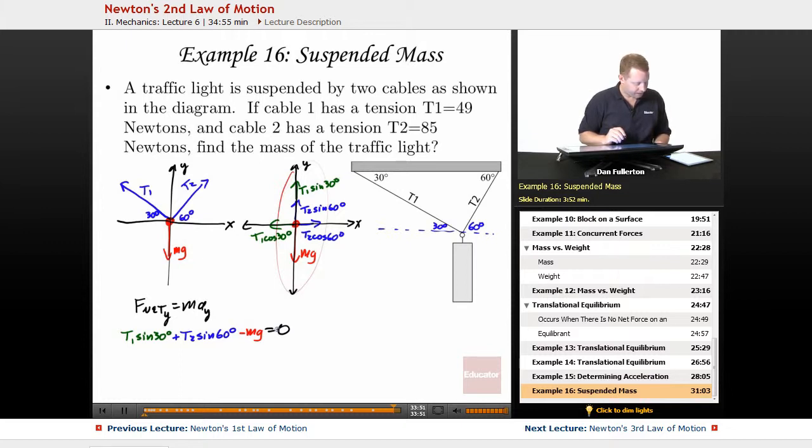Well when I do that, I can then say since T1 is 49, that's 49 sine 30 degrees, plus T2 is 85 newtons, 85 sine 60 degrees, must be equal to mg.